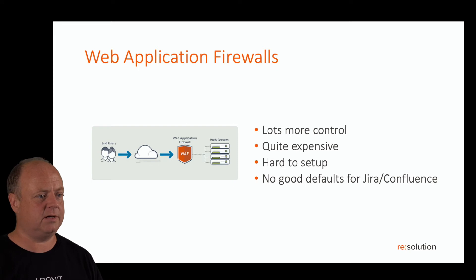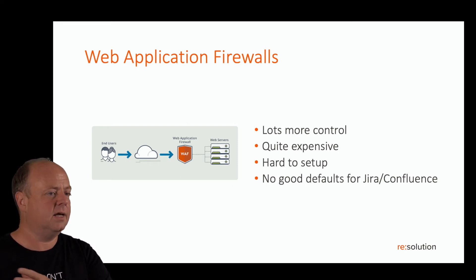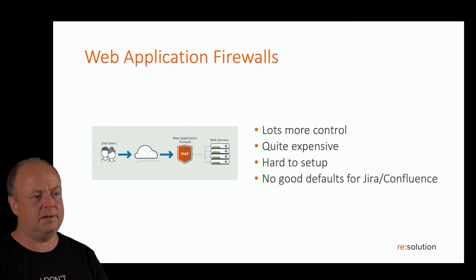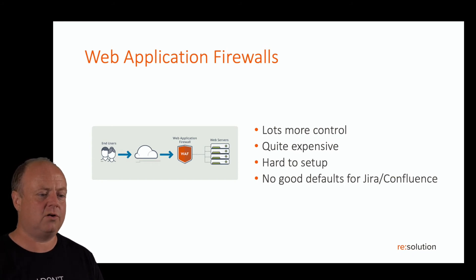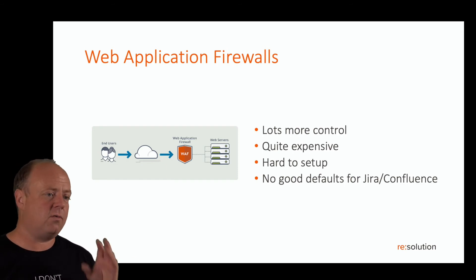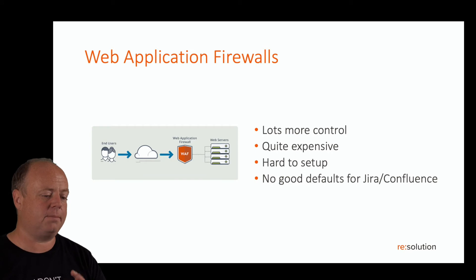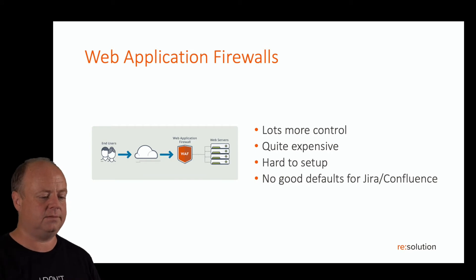You have to go through a big learning phase with Jira and Confluence because there are no good defaults for those applications. So web application firewalls can be a good solution, but it's also a big, big overhead.